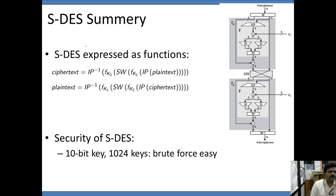This is the summary of SDES. SDES can be expressed through the following functions: the given plain text undergoes initial permutation, subsequently the round function, switching of the halves, second round function, inverse initial permutation, producing the ciphertext.